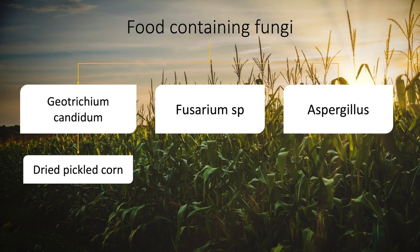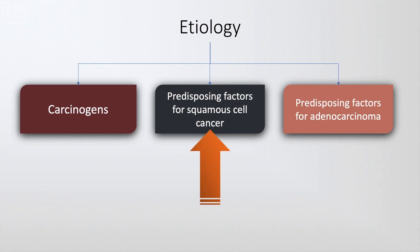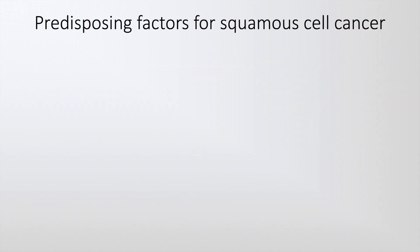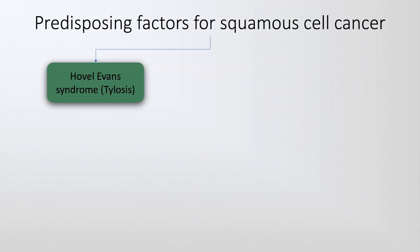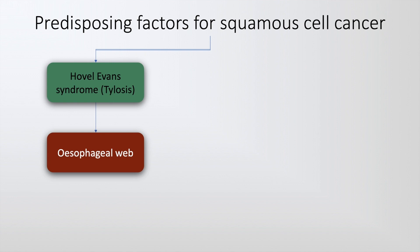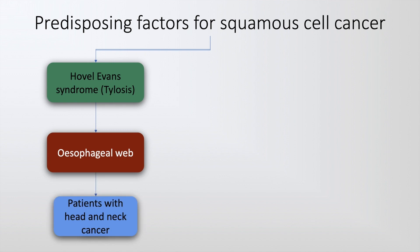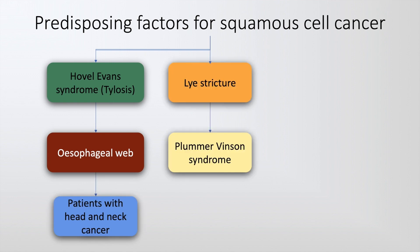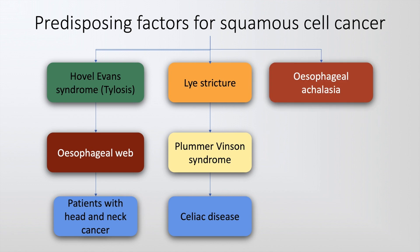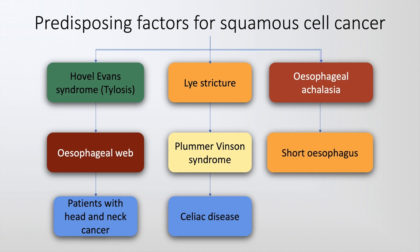Aspergillus is also seen in corn. The predisposing factors for squamous cell cancer include palmoplantar keratoderma or Tylosis, also called the Howell-Evans syndrome, esophageal web, patients with head and neck cancer, lye strictures, Plummer-Vinson syndrome, celiac disease, and esophageal achalasia.